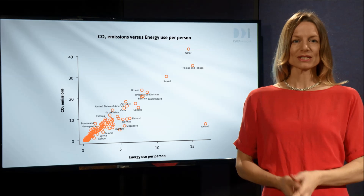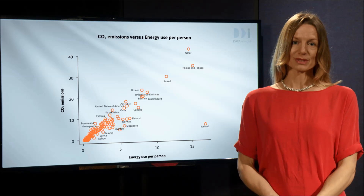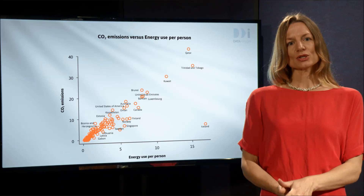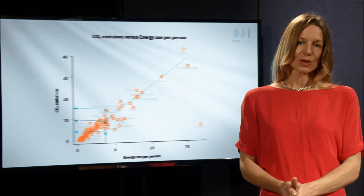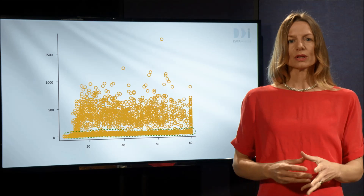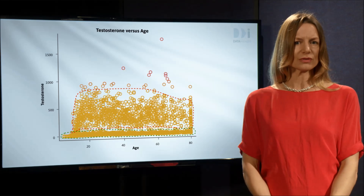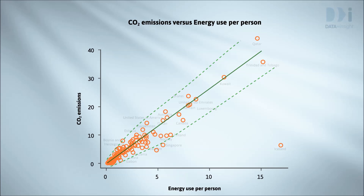In the last video, we used scatter plots to display relationships between two numeric variables. We introduced interpreting scatter plots in terms of trend and scatter. We also saw examples with obvious clusters of points, triggering the question: why are these sets of individuals so different? But usually it is most useful to view scatter plots in terms of trend plus scatter with the occasional outlier.